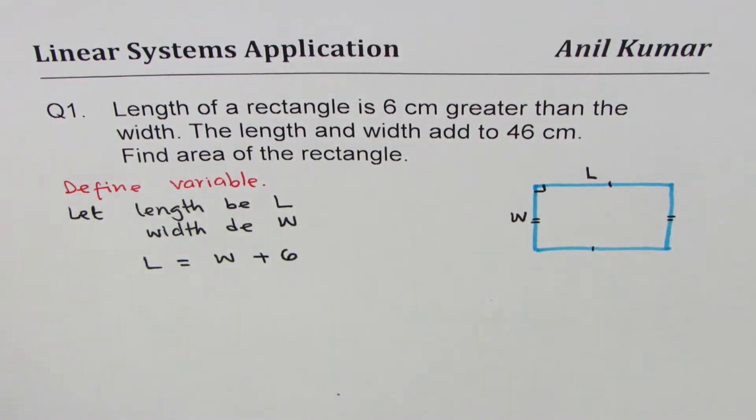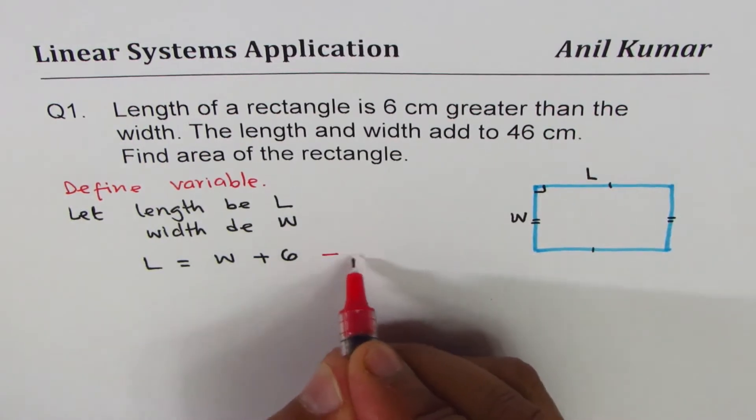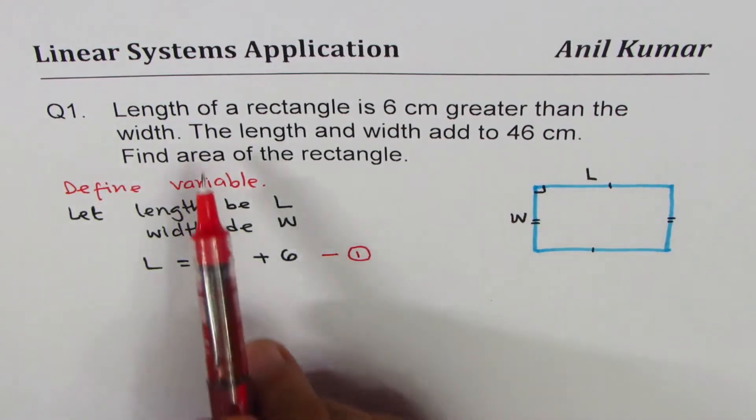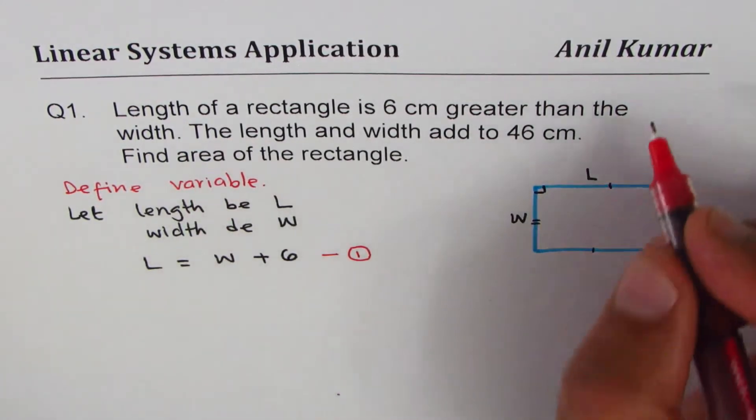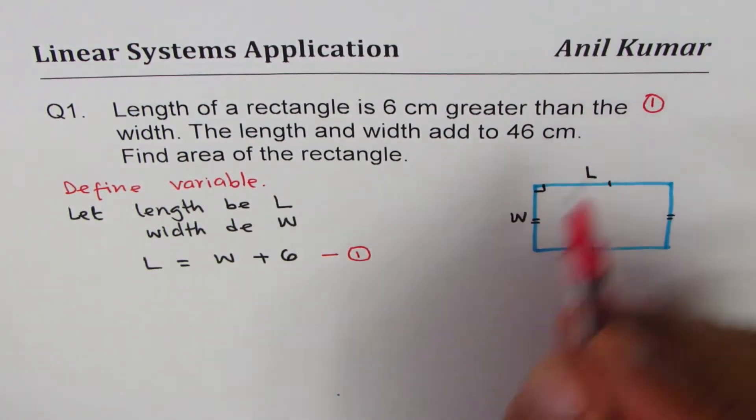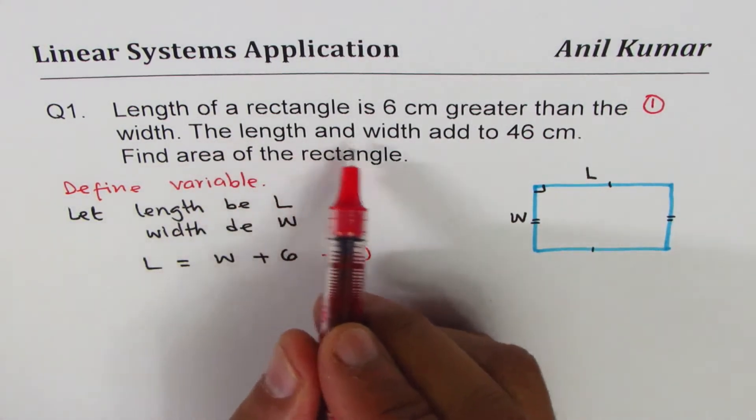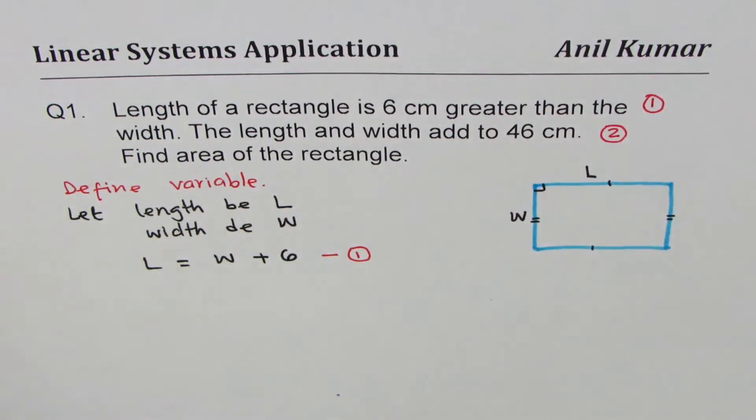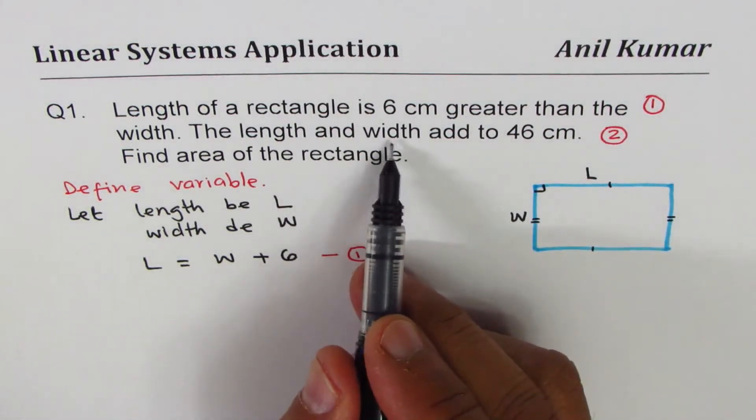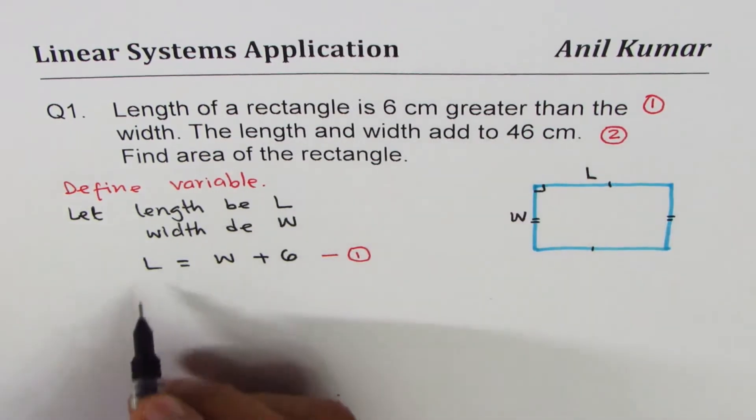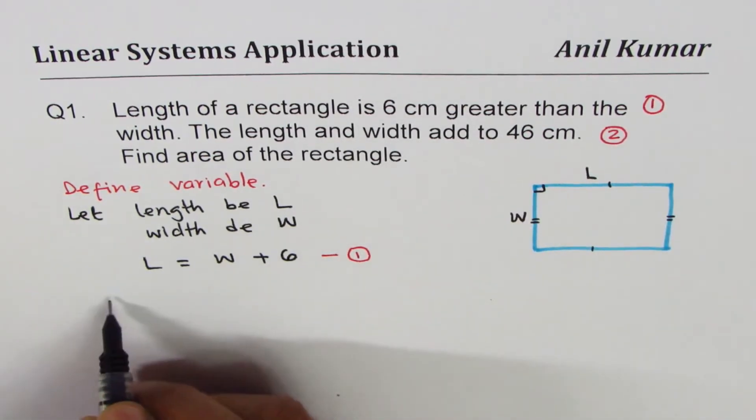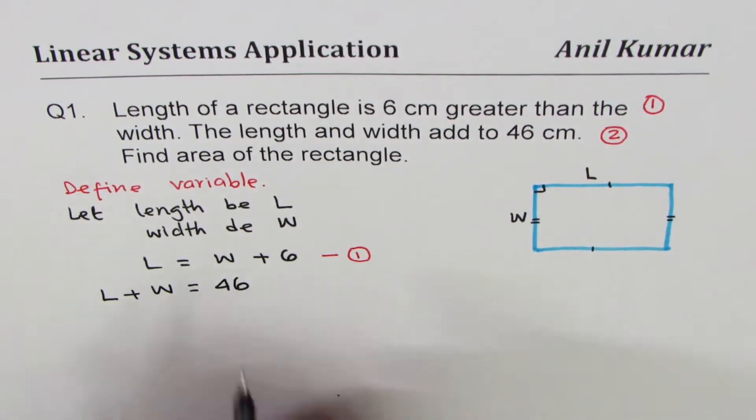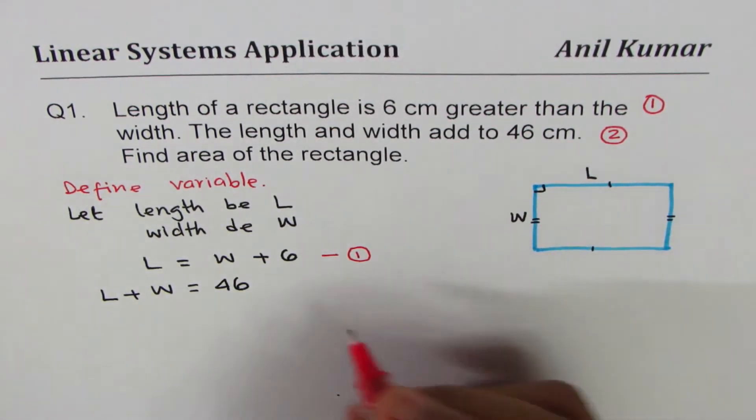That becomes our equation number one. It's good to write the equation and number it. The second statement is the length and width add to 46. Very simple: length plus width equals 46. That means we are saying L + W = 46.